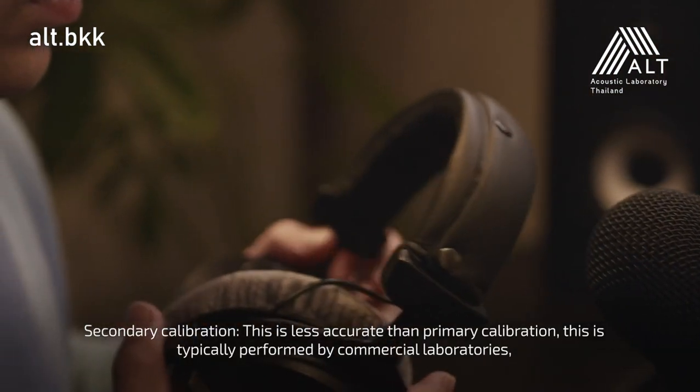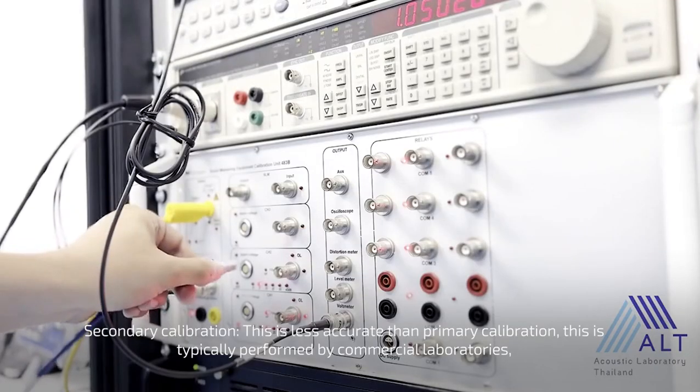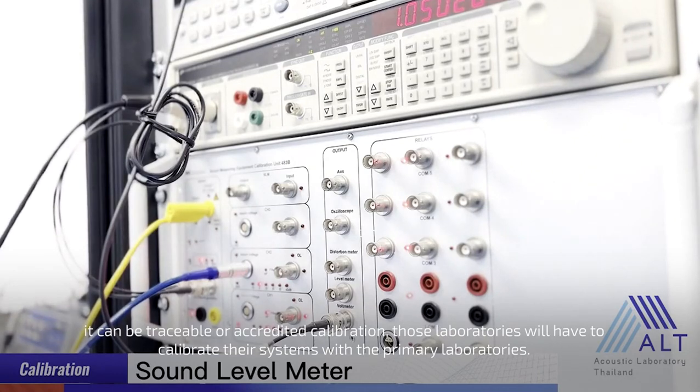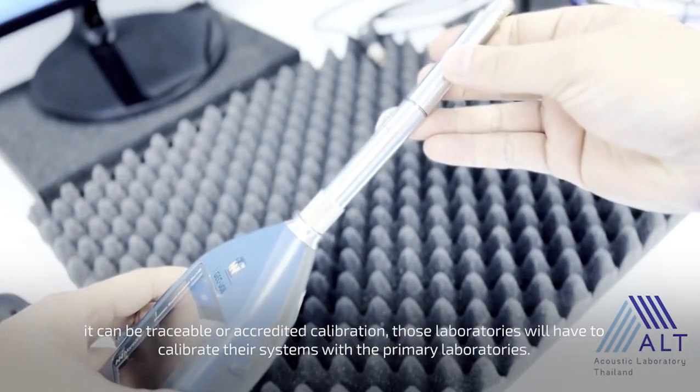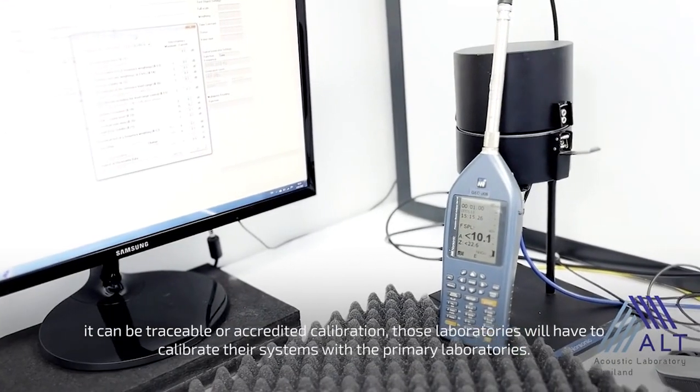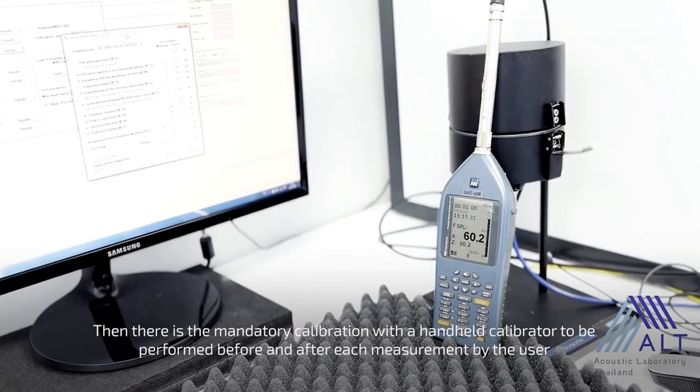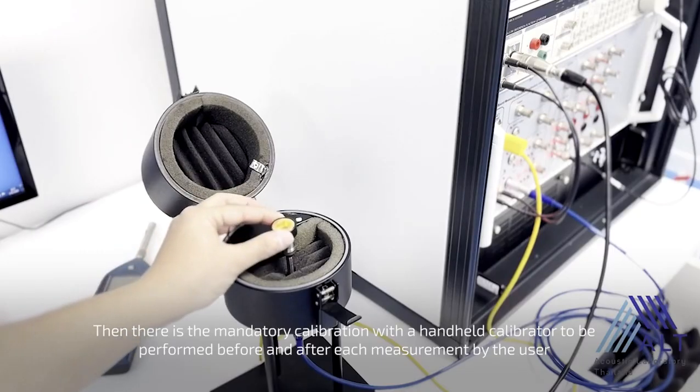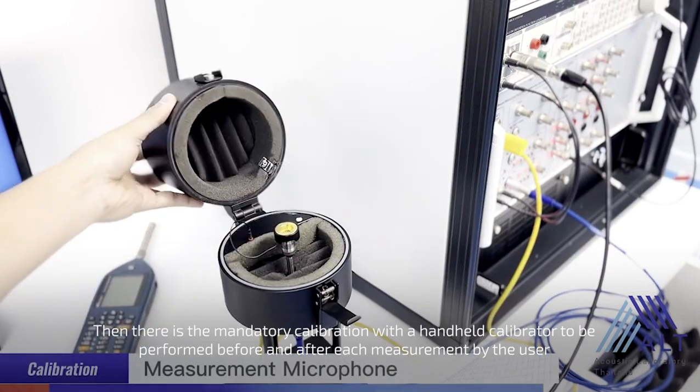Secondary calibration is typically performed by commercial laboratories. It can be traceable or accredited calibration. Those laboratories will have to calibrate their systems with the primary laboratories. Then there is mandatory calibration with a handheld calibrator to be performed before and after each measurement by the user.